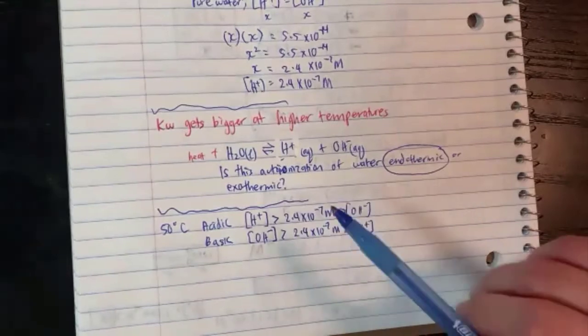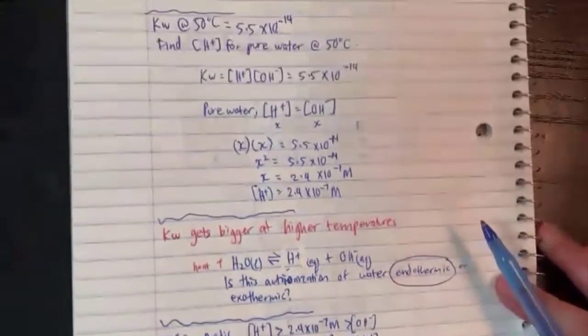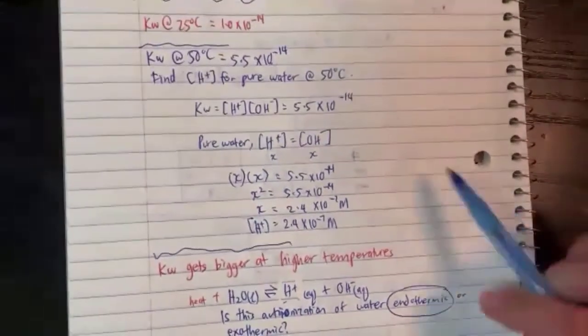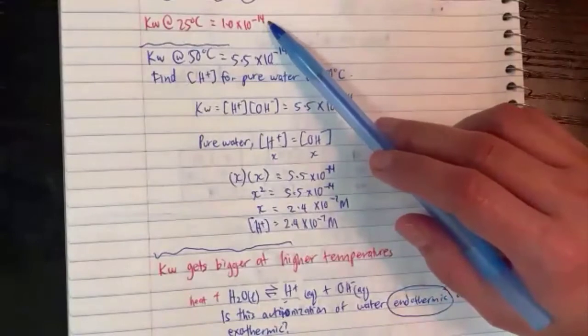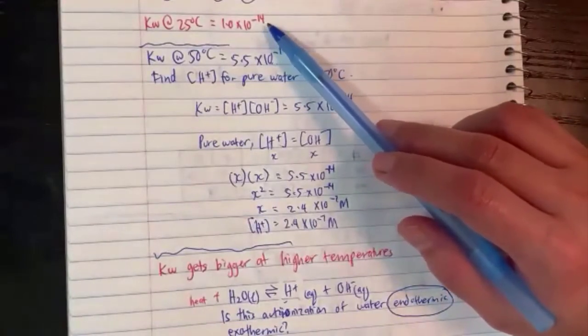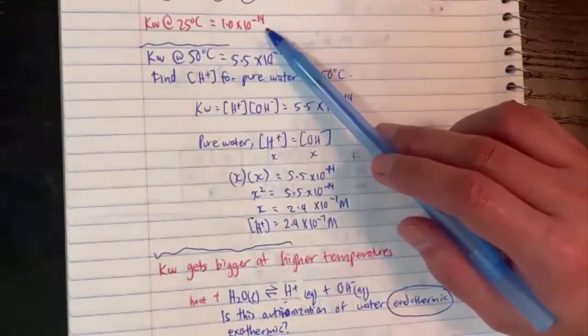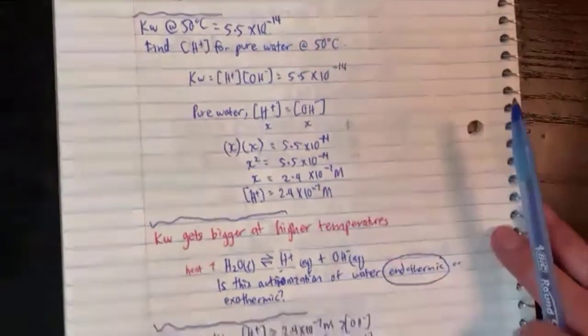I only need you to remember the number for 25 degrees: for pure water at 25 degrees, H⁺ and OH⁻ is 1.0×10⁻⁷ molarity. Make sure everyone remembers that for 25 degrees.